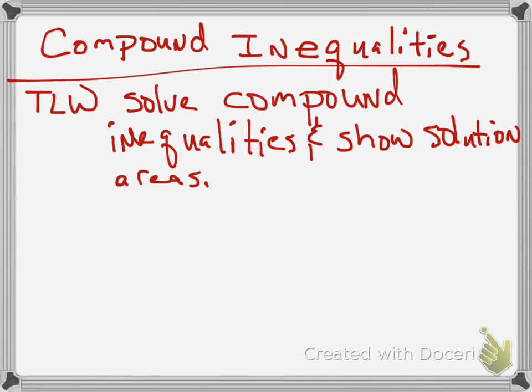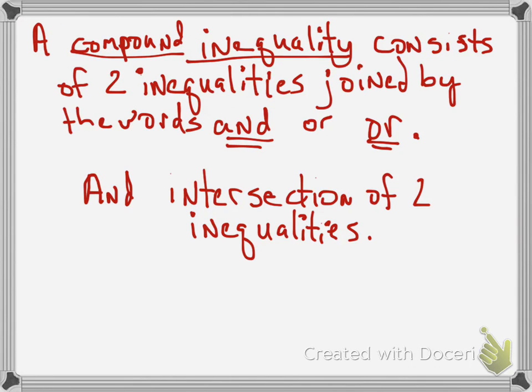What is a compound inequality? A compound inequality consists of two inequalities joined by the words 'and' or 'or'. 'And' is the intersection of two inequalities, while 'or' is like two graphs on one number line, or two problems in one. Most of the 'and's will look a certain way, and most of the 'or's will look a certain way.